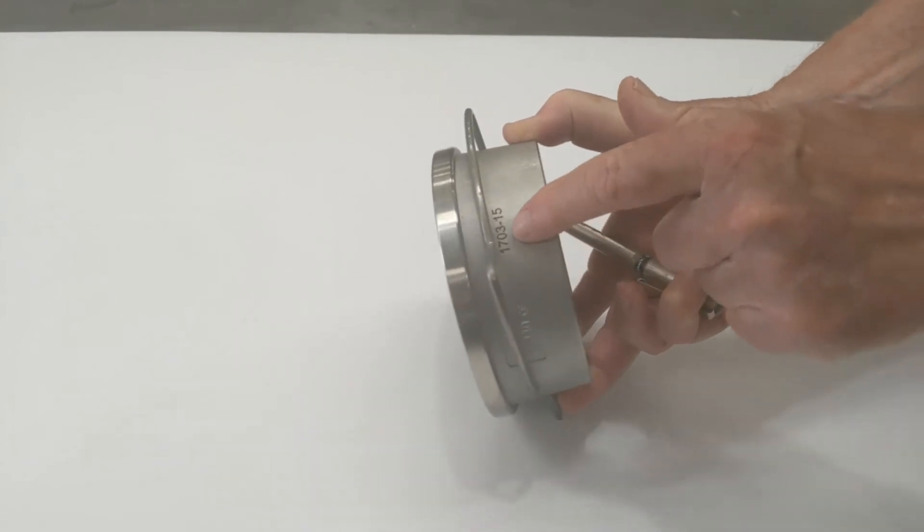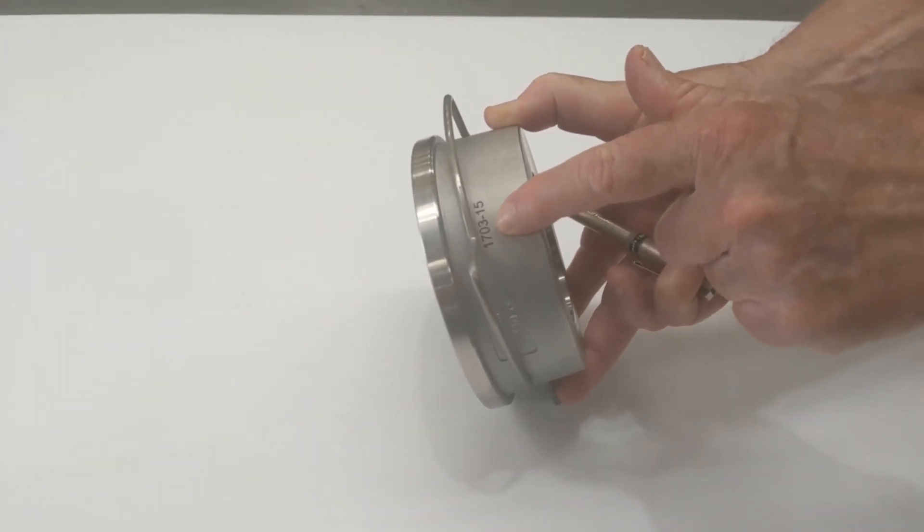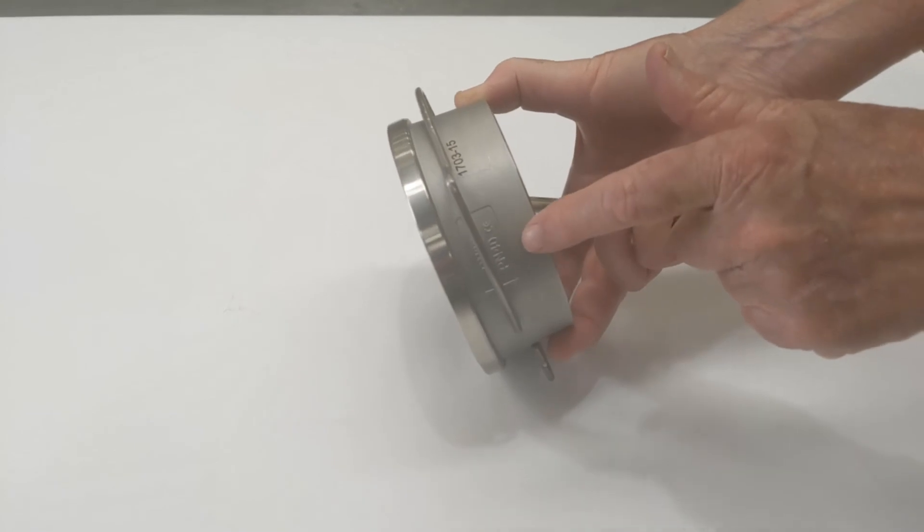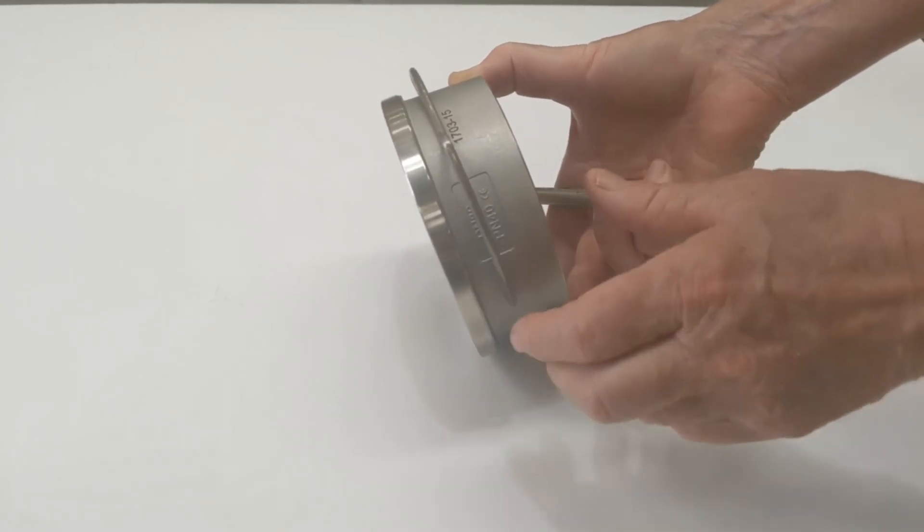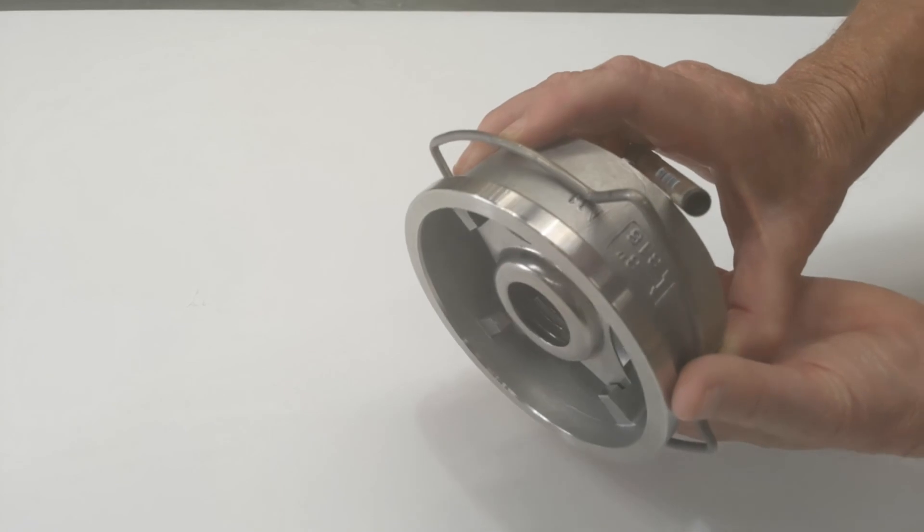The units come with their own heat number on there, so we can supply the material certification and the part number, pressure range, and 316 markings.